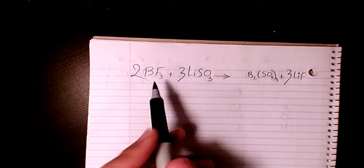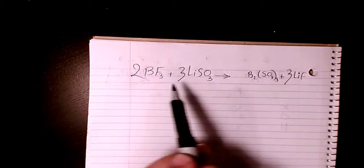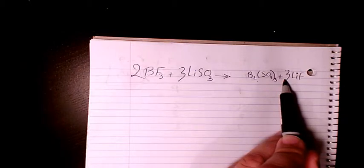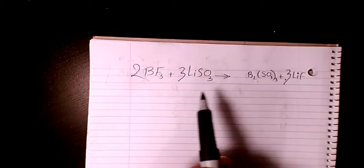What about fluorine? You have 2 times 3, 6, and here we have 3, so that's not balanced yet. So in order to balance it, we need to have...